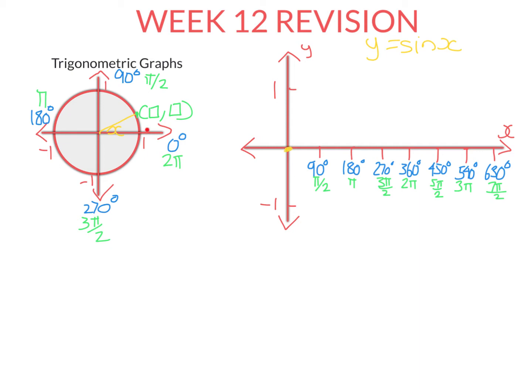Then going around, sine will be a positive number, more than zero, and it gets to a peak of one. This is the highest value sine can take — one at 90 degrees — because the y value there is one. So sine of 90, or sine of pi on 2, is one. The y value at 180 is zero, so sine of 180 is zero. Sine of 270 is minus one, and sine of 360 is zero again. To get all these points, I just took the y value at each of these points on the unit circle.